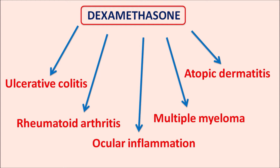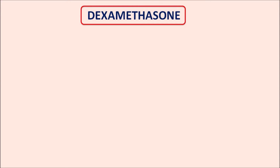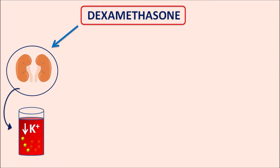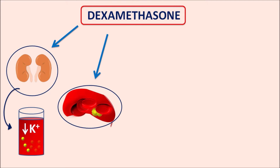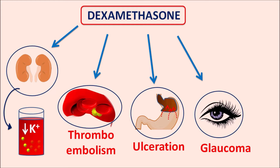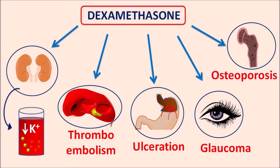This drug reduces inflammation and suppresses immunity, but it also has a large number of side effects. Dexamethasone can affect the renal system and alter renal functionality. It can reduce serum potassium levels resulting in hypokalemia, increase the risk of thrombosis and thromboembolism leading to cardiovascular disorders, and affect the gastrointestinal system resulting in increased ulceration and perforation. It can also affect the eye causing glaucoma and cataract, and affect the bones resulting in osteoporosis.